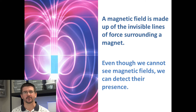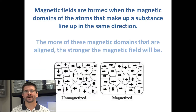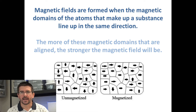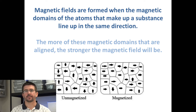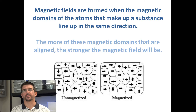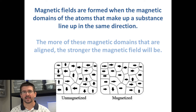Before we get into detection, I want to talk about how magnetic fields are formed. Magnetic fields can form permanently in an object, like a permanent magnet, or they can form temporarily. Magnetic fields are formed because of the way that the atoms, and specifically the electrons in the atoms of a substance, line up and arrange themselves.